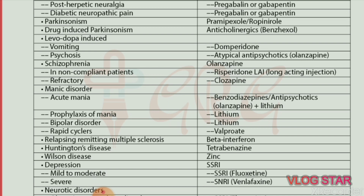Psychosis — drug of choice is atypical antipsychotics, including olanzapine. Schizophrenia — drug of choice is olanzapine. In non-compliant patients, drug of choice is risperidone long-acting injections. Refractory schizophrenia — drug of choice is clozapine.